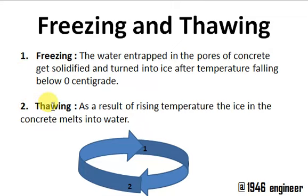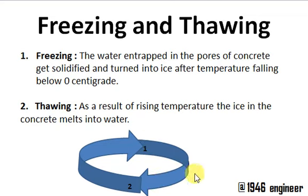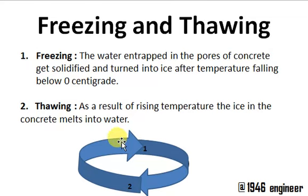Thawing is the second part of the cycle. During summers, as temperatures rise, the ice in the concrete pores turns back into water — that is thawing. Thawing is simply the melting of ice into water in the concrete pores. This cycle of freezing and thawing repeats every year, and its effect is predominantly seen in cold regions rather than tropical countries.